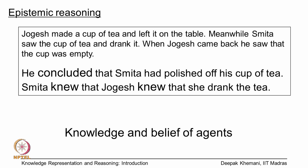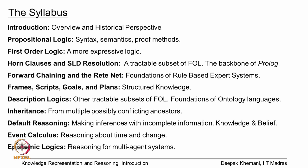Finally, we move on to something called epistemic reasoning, which is how agents reason with belief and knowledge and what they think other agents know. Looking back at the tea story, at the end we can say that Jogesh concluded that Smita had polished off his cup of tea, and Smita knew that Jogesh knew that she drank the cup of tea. This kind of representation and reasoning is possible in epistemic logic, which will be the final part of this course. The syllabus will basically begin with propositional logic and move on towards epistemic logic, going through all these things that you can see here.